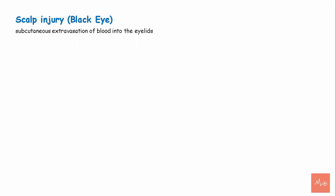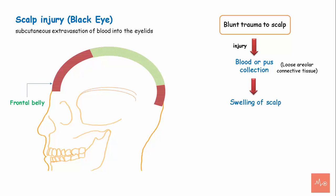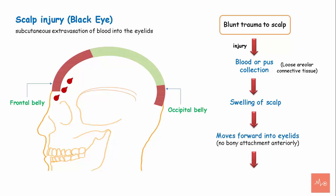Scalp injuries can lead to black eye due to subcutaneous extravasation of blood into the eyelids. Blood or trauma to the scalp can cause pus or blood accumulation in the loose areolar connective tissue, causing scalp swelling. Since the frontal belly of the occipitofrontalis muscle has no bony attachment anteriorly, blood moves forward into the eyelids, leading to hematoma formation and black discoloration around the eye.